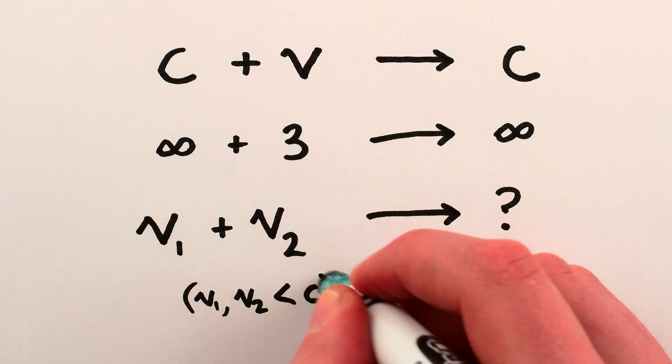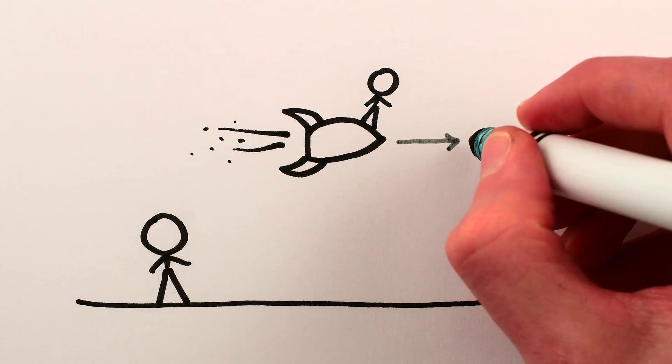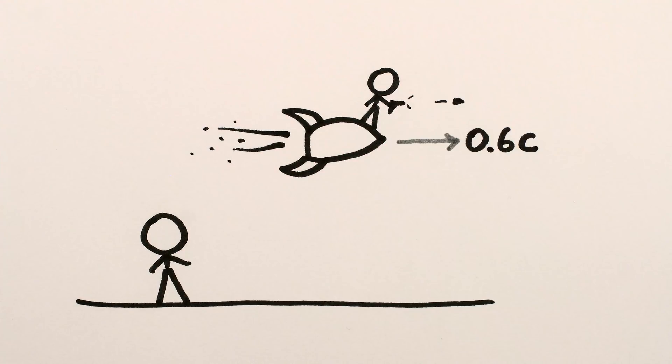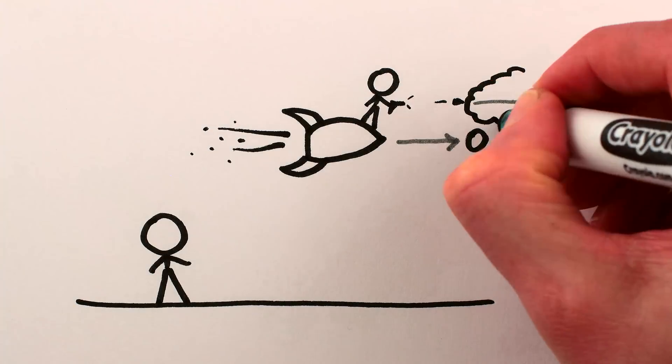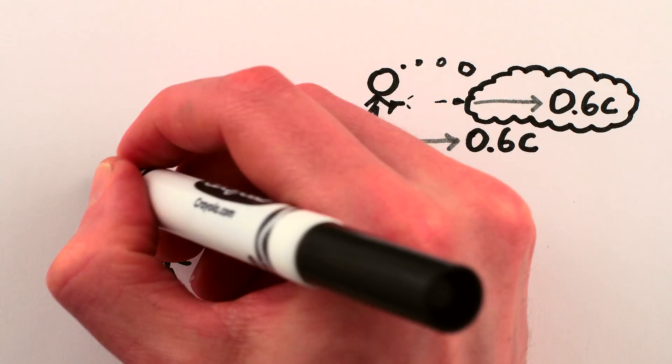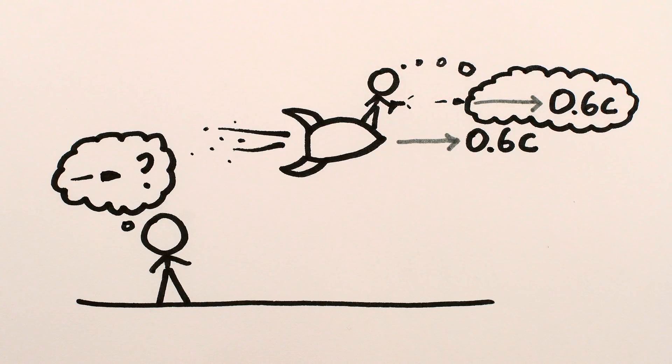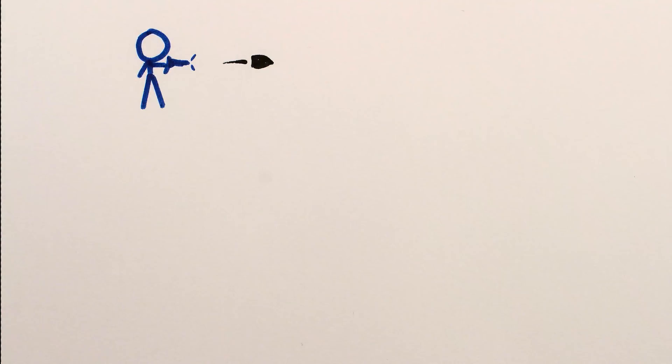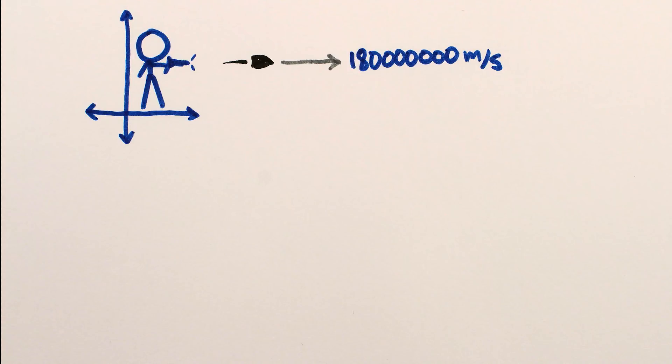But what about speeds slower than light speed? What if you're traveling at 60% the speed of light to the right, and you shoot a death pellet that is itself going 60% the speed of light to the right relative to you? How fast is it going from my perspective?